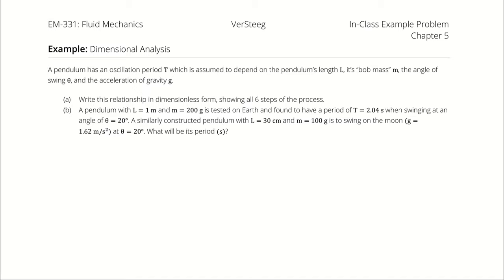Then we will use data from Earth — a length, a mass, a period, an angle of swing, and an acceleration of gravity — to figure out what the period will likely be in a different circumstance. It's essentially a model-prototype relationship, using Earth and the Moon to change the acceleration of gravity meaningfully.